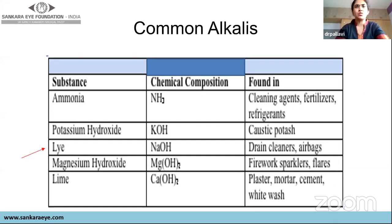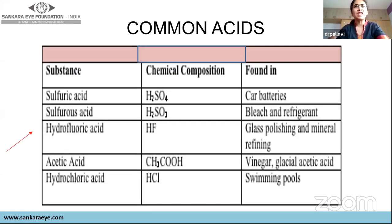What are the common alkalis? Ammonia is found in cleaning agents, potassium hydroxide in caustic soda. The most dangerous of all alkalis is sodium hydroxide, also called caustic soda, used in drain cleaners. Lime is calcium hydroxide, seen in cement, mortar, or plasters. Common acids include sulfuric acid from car batteries, also used as battery water in inverters at home. The strongest of the acids is hydrofluoric acid.